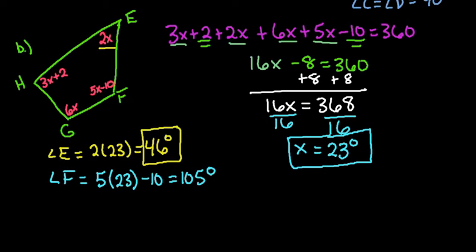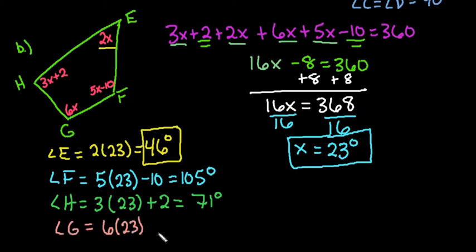And for the next one, angle H is equal to 3 times 23 plus 2, and I don't know why I skipped G. I just did, because that's what I had done on my paper next. This ends up giving us 71 degrees, because 3 times 23 would give us 69, plus 2 is 71. And then our final angle, angle G, is going to be 6 times 23, which ends up being 138 degrees.